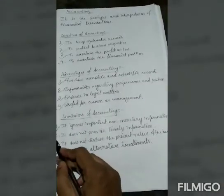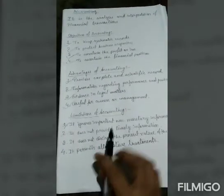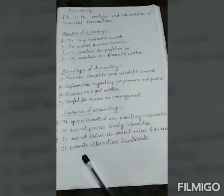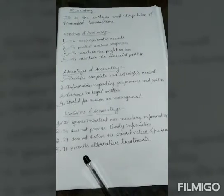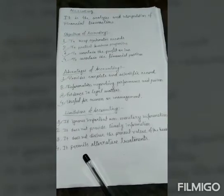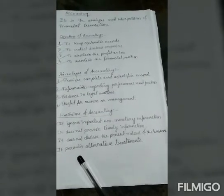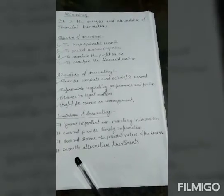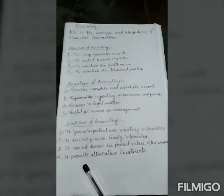Now, the next limitation is it does not provide timely information. Accounting is designed to supply information in the form of statements like balance sheet, profit and loss account, for a period normally one year. The business requires timely information at frequent intervals to enable the management to plan and take corrective action. Traditionally, financial accounting is not supposed to supply information at shorter intervals than one year.